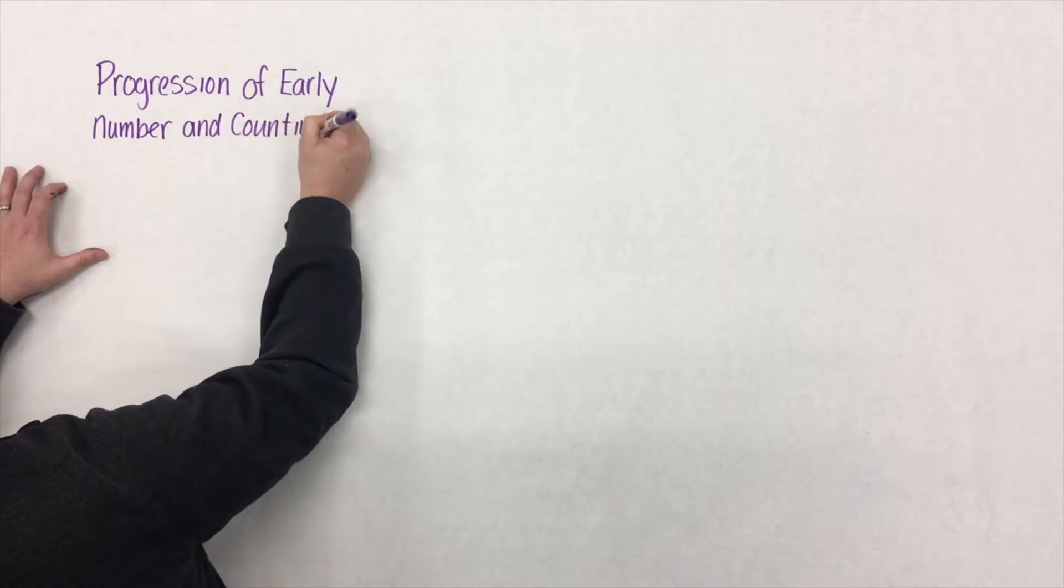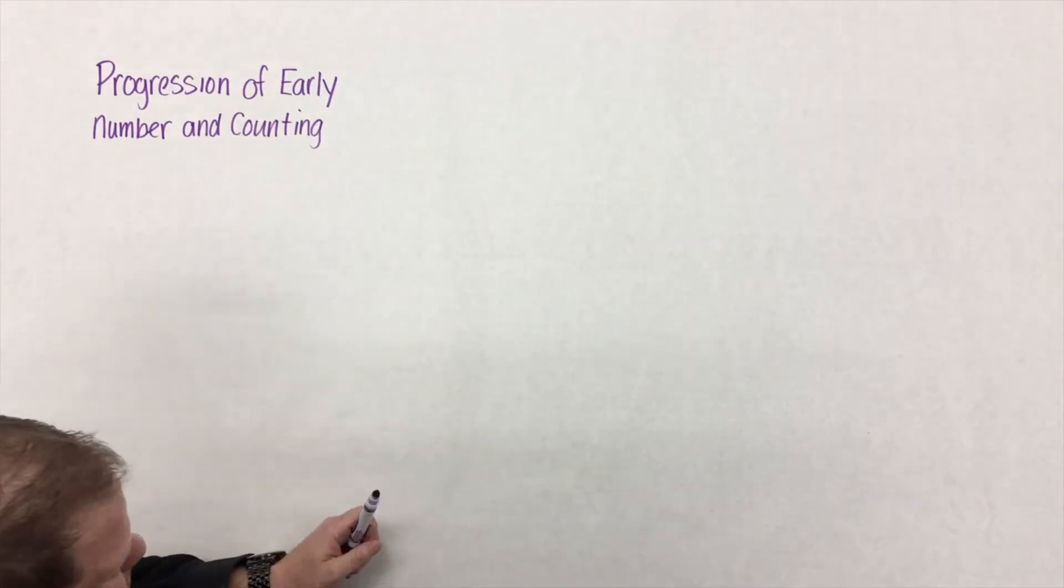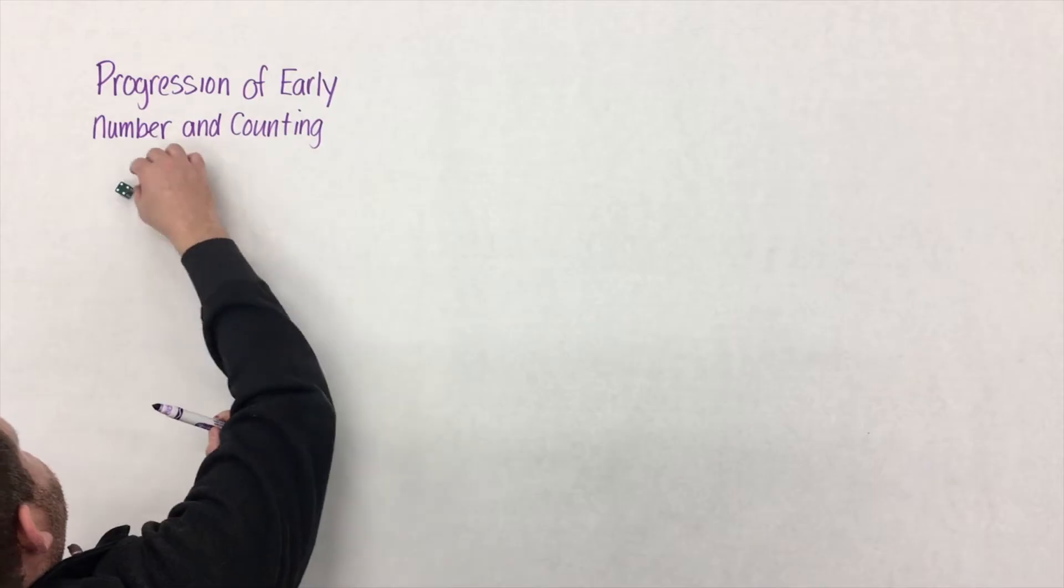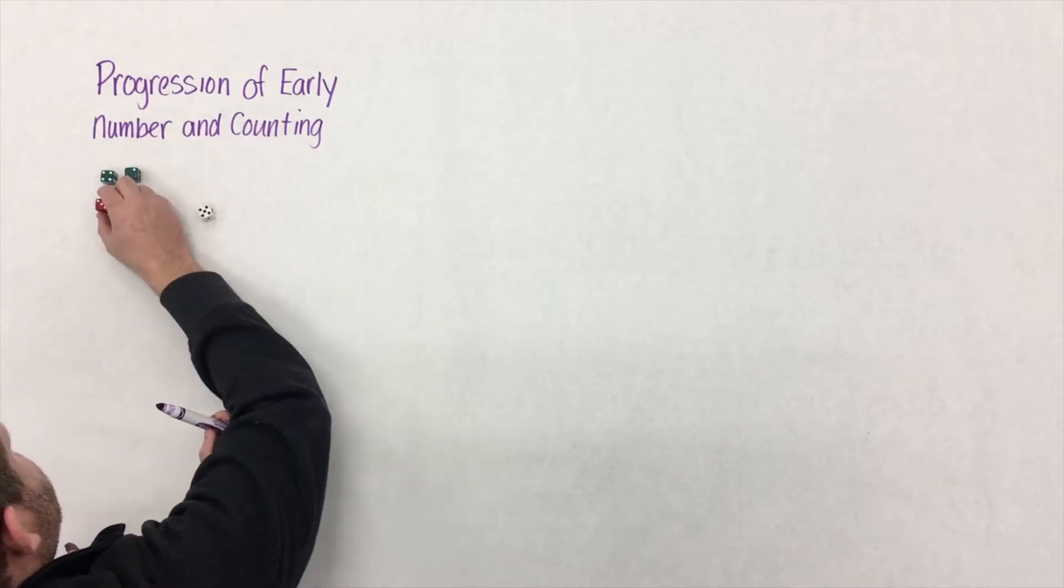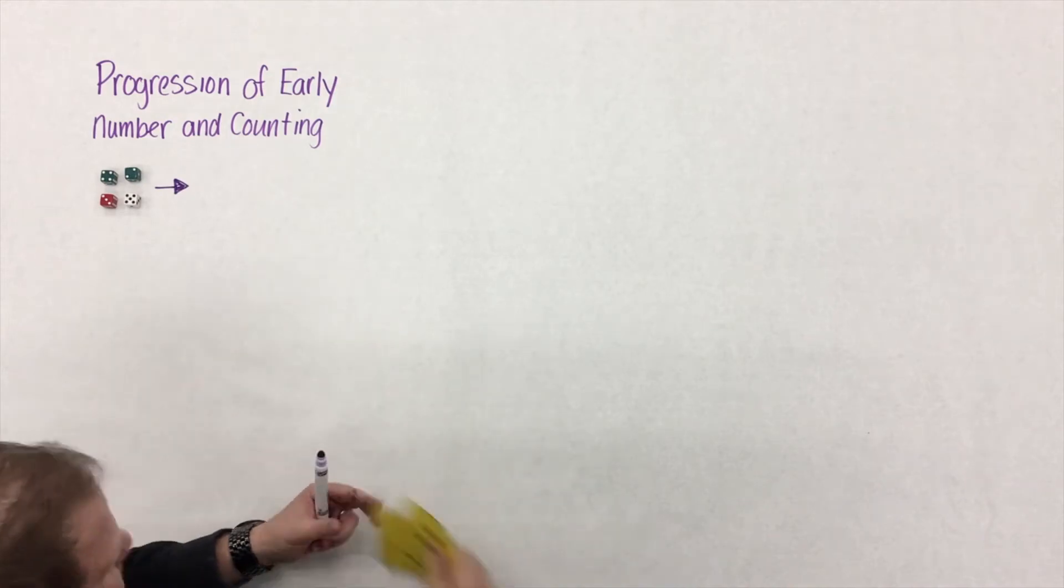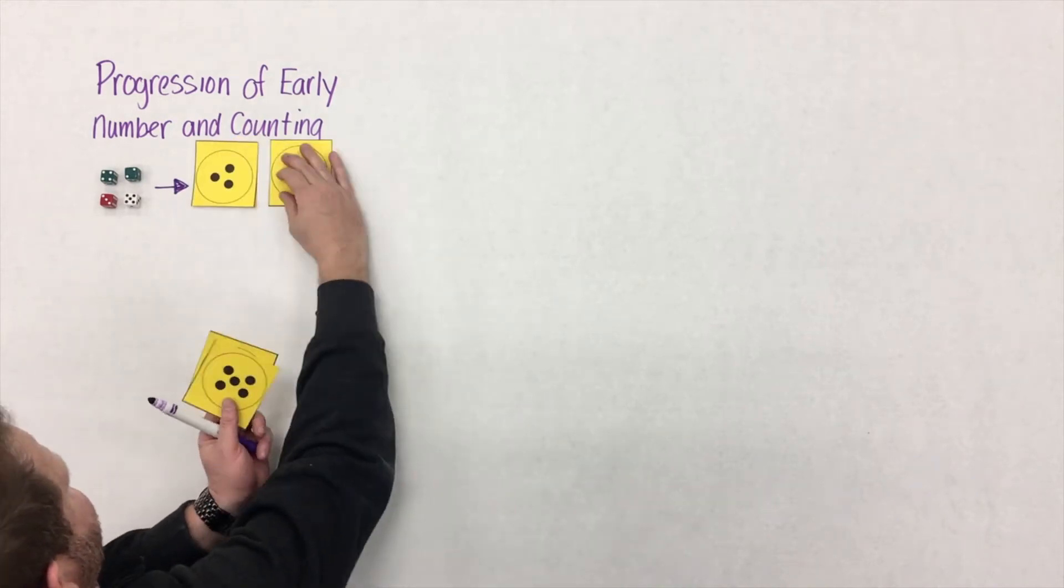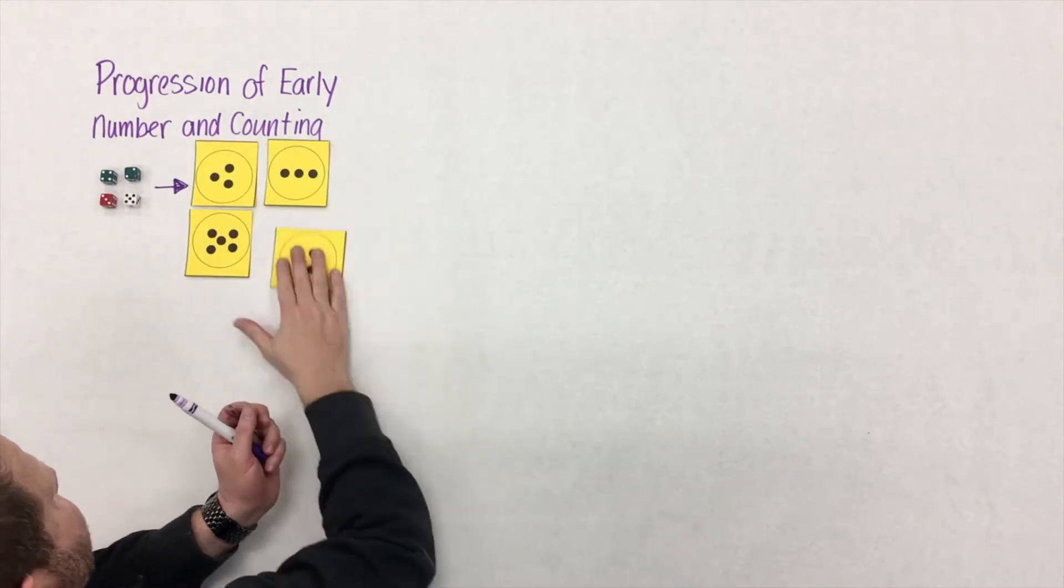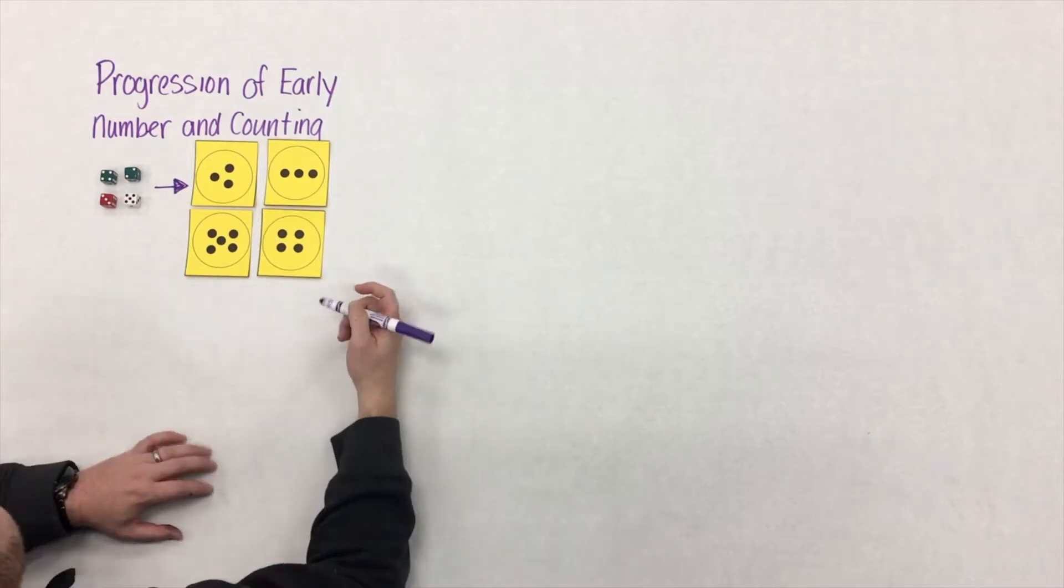Before students come to us in kindergarten, they begin to see what numbers look like. Literally. Check out these dice. Students know that there's 4, 2, 3, and 5, but they don't know that quantity. They're just simply calling out number names and matching them to what the things look like.